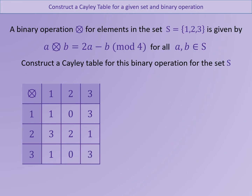We are now going to consider whether the binary operation is commutative. We can try some values for a and b and determine that it is not, because 2a minus b and 2b minus a do not always give the same answer mod 4 for various input values.